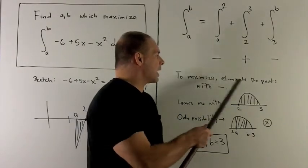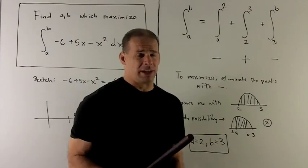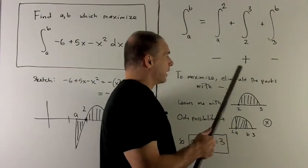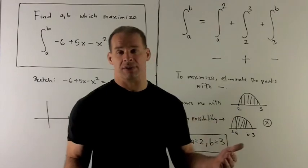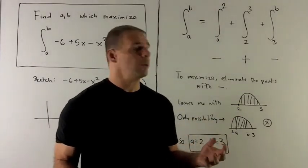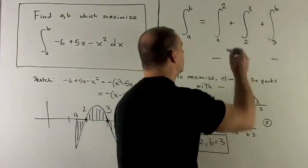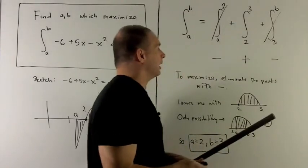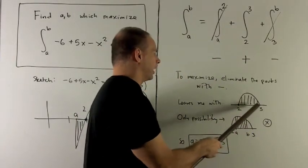If I want to maximize, I don't want any region of negative area showing up in my sum, because if that's in there, I could actually get my number bigger by just throwing that away. If I take away negative numbers, that's the same as adding positive numbers. So we don't want anything in the regions from a to 2 or from 3 to b. So that's going to leave me with the region from 2 to 3.